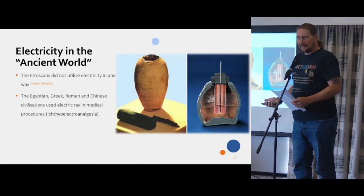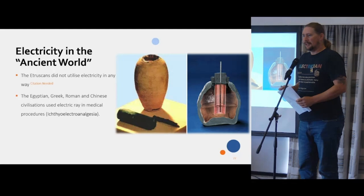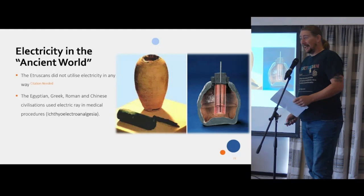For context, an electric ray can produce up to 200 volts at about 30 amps. An electric light system in a UK household is 240 volts at 6 amps and is enough to kill you. So yeah, I'll see my modern doctor, thank you.